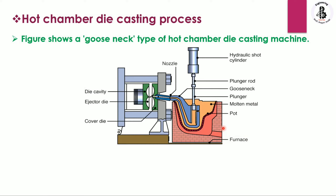On top of the furnace we are using a pot, and into the pot it will be the molten form of the metal. The metal is collected into the pot and by increasing the temperature with the application of the furnace it is made into molten form. For generating the pressure we are using a hydraulic cylinder on the top side, and this hydraulic cylinder is connected with a plunger rod.